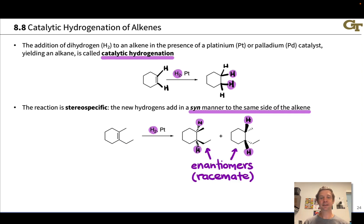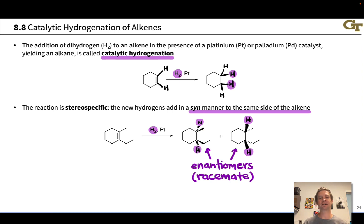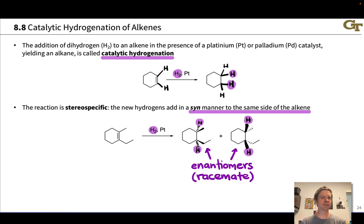These two isomers are enantiomers of each other, and because we're starting with an achiral alkene and not using a chiral catalyst, we get a racemic mixture — an equal mixture of the two enantiomers in these hydrogenation reactions.